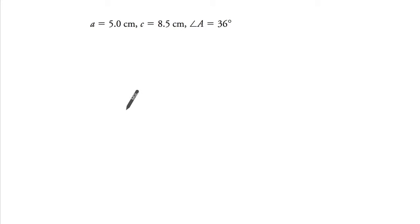We have a is 5.0, let's say, sorry, that's 0.5, 5.0, and then c, so this is 5.0. C is even longer than that, let's say that's 8.5.